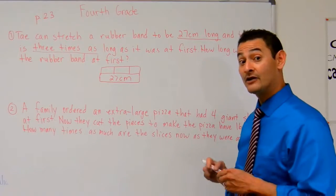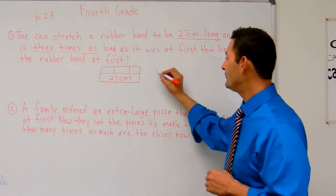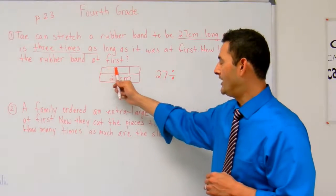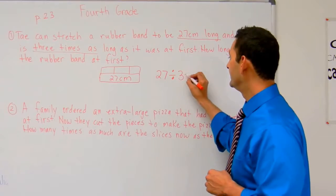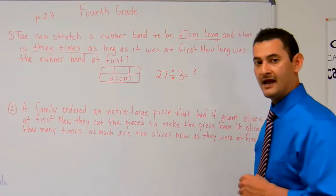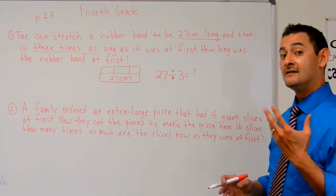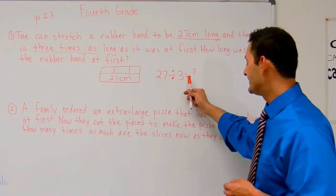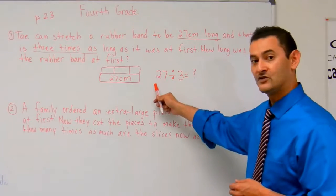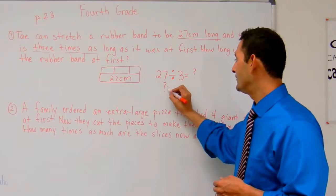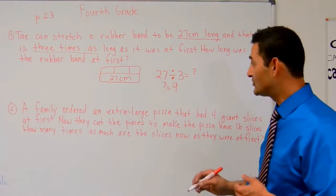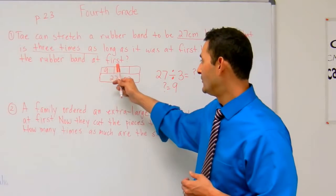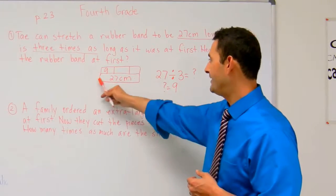Now we're going to write division equations. So here we're going to write 27 divided by how many? 1, 2, 3 equals what? I can use my knowledge of multiplication and division being related. That unknown there is 3 times something equals 27. The unknown is 9. So at first, it was just 9. That's how the rubber band was at first. Then it stretched 1, 2, 3 times, and it became 27.